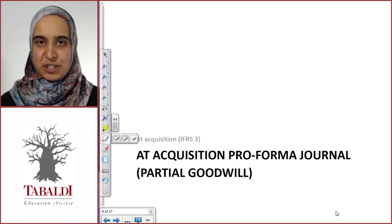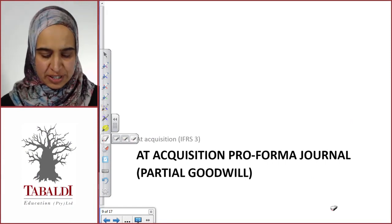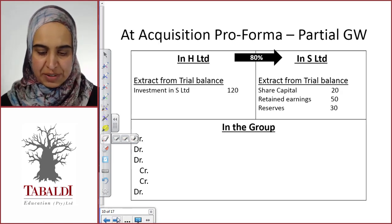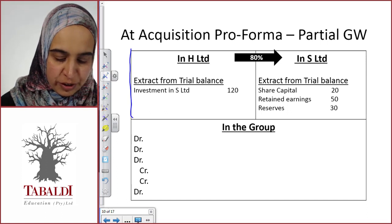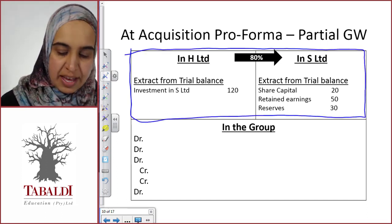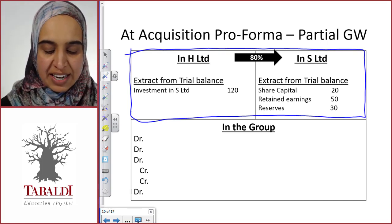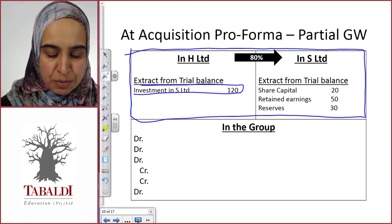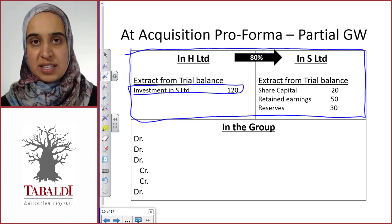This brings us to our at-acquisition pro forma journal entry. But before we do the journal entry, let's have a look at why we're doing it. If we're looking at the H Limited group — the consolidated financial statements — we can see that we have an investment in S Limited. Remember from the previous lecture, this is not an investment just in the shares.